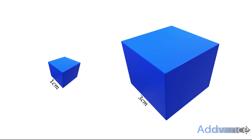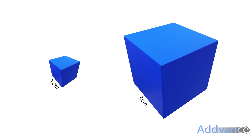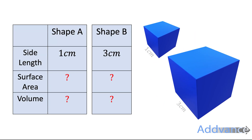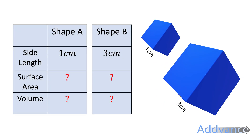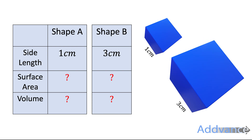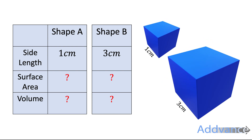Here are two cubes. The smaller cube has a side length of one centimetre and the bigger cube has a side length of three centimetres. I'd like to start by finding the surface area and volume of these two cubes. Pause the video now and take a couple of minutes to work out the surface area and volume of both shapes. If you can't remember how to do this, you should watch my videos on surface area and volume before we continue.